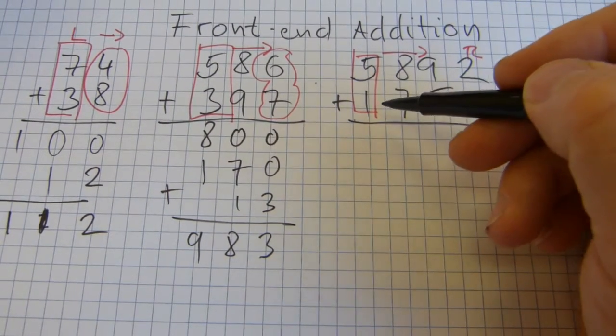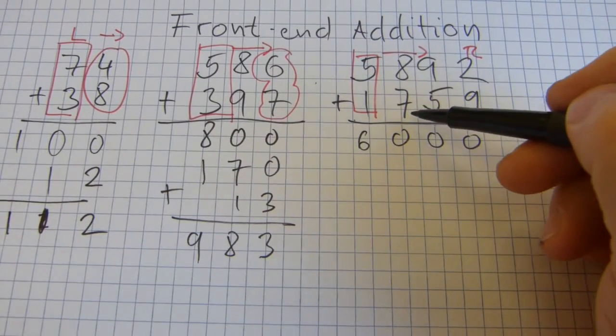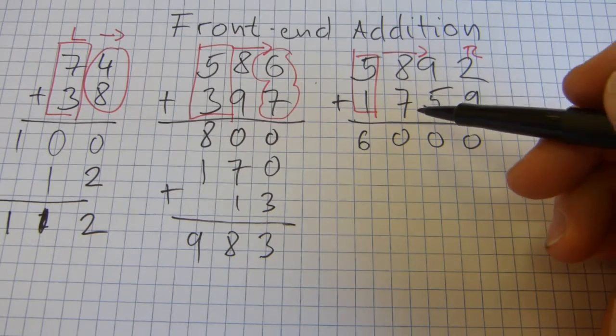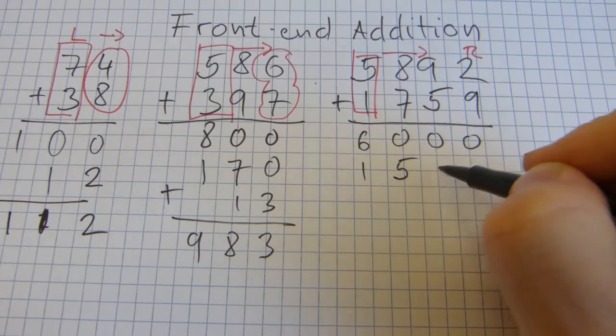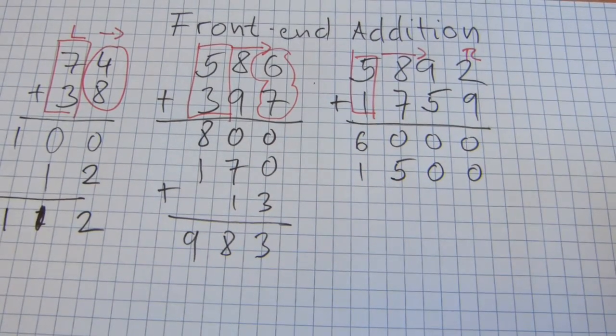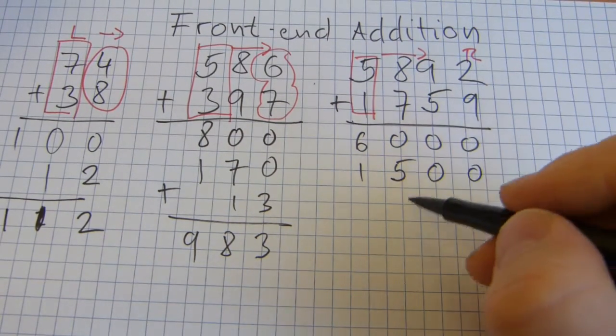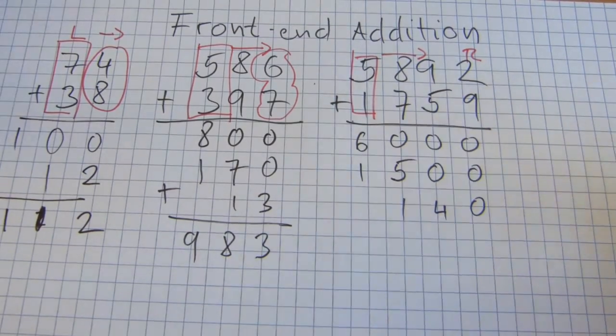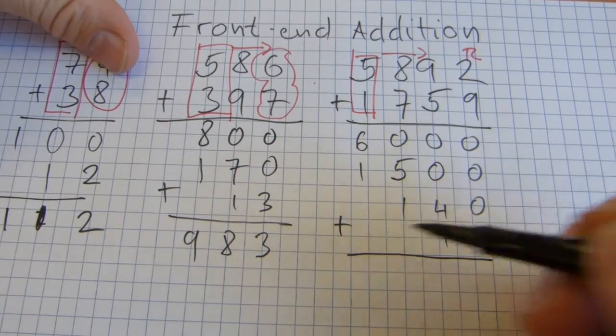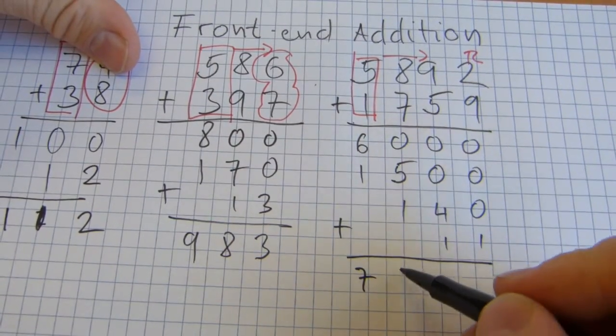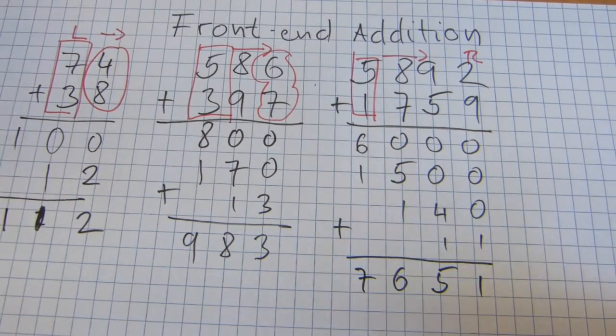5 plus 1, 5,000 plus 1,000 is 6,000. And 800 plus 700 is, sorry, 1,500, and it's written down there, correctly in their columns. 90 plus 50 is 140. And 9 plus 2 is 11. And then, let me just add everything up. 6 plus 1 is 7, 5 plus 1 is 6, 4 plus 1 is 5, and the 1. So, that's how it works.